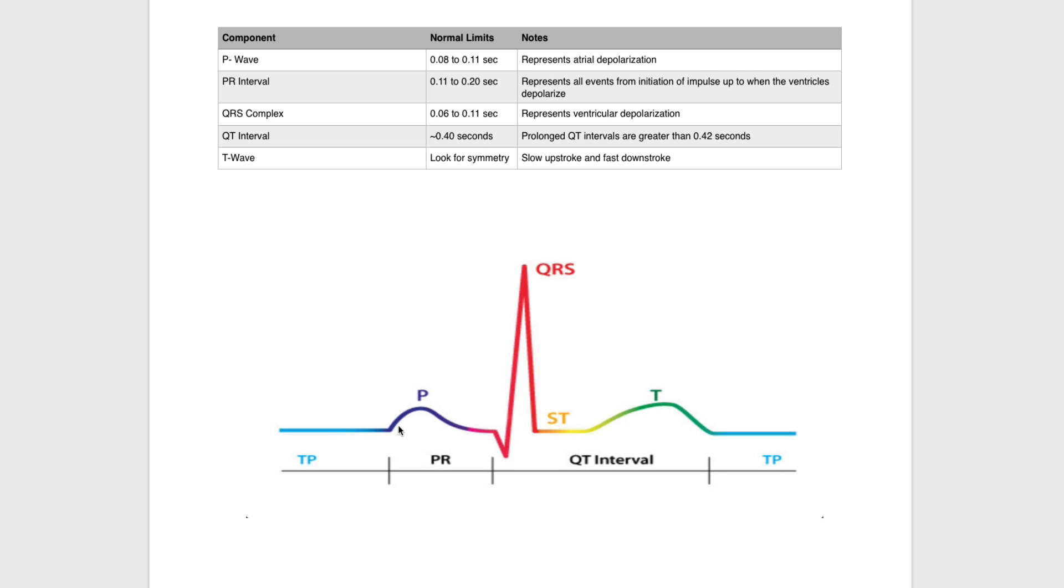Next is the PR interval. The normal limit for the PR interval is 0.11 to 0.20 seconds. The PR interval represents all events from the initiation of impulses up to when the ventricles depolarize.